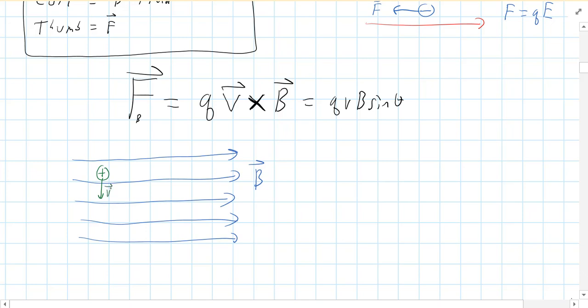So the force on that charge is going to be perpendicular to both the velocity and the magnetic field. Now, looking at that picture, the velocity is vertical. The magnetic field is horizontal. What directions could be perpendicular to both? Well, it's either got to be into the page away from you or out of the page towards you. So the force will be one or the other.